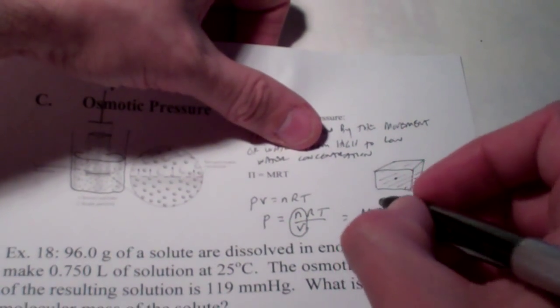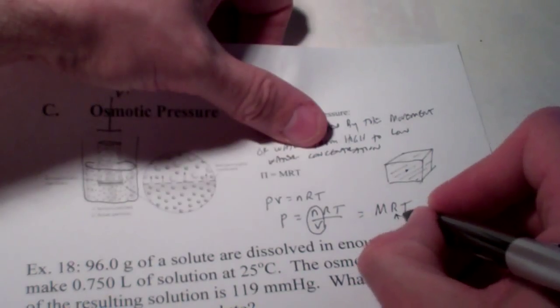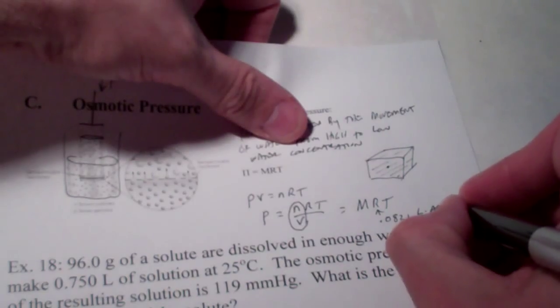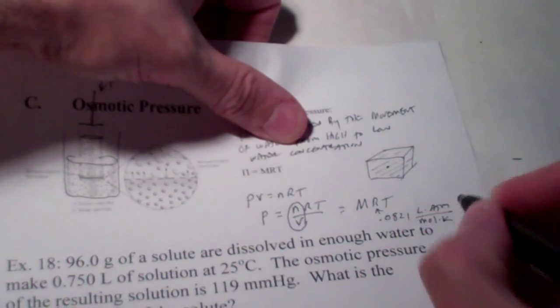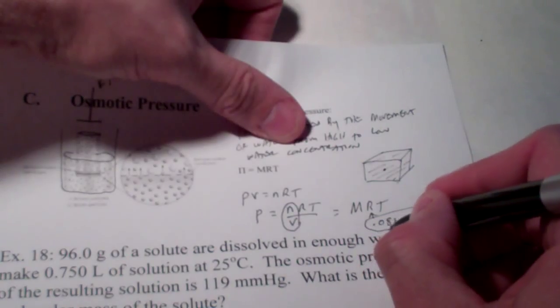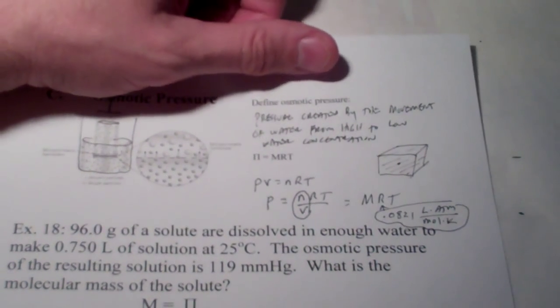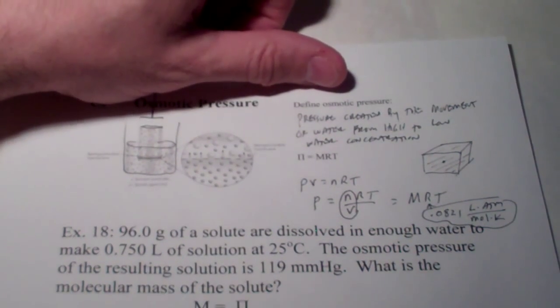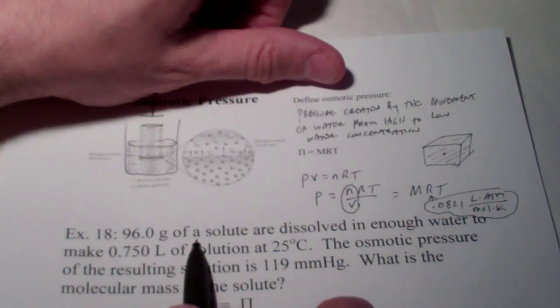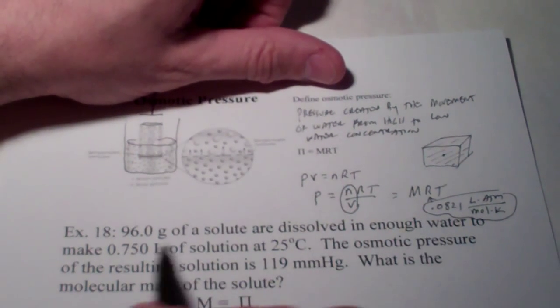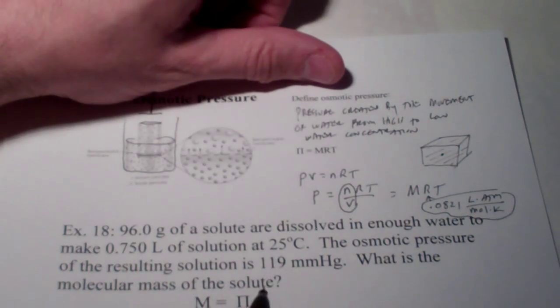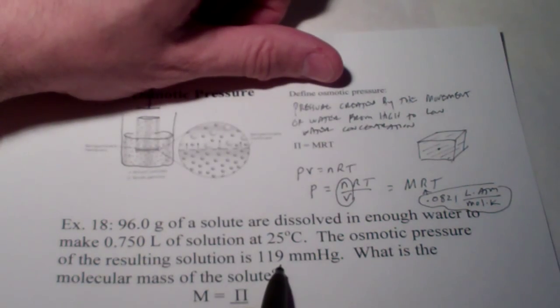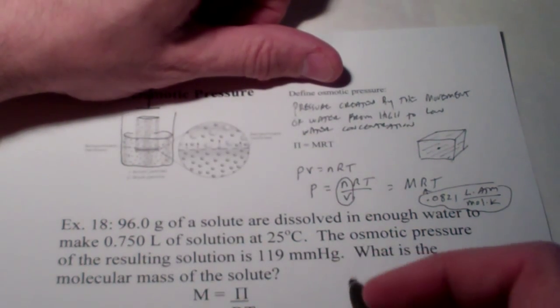So, we use the ideal gas law constant R. And it's the same one. R is 0.0821 liter atmospheres per mole kelvin. It's the same gas law constant that we used in an earlier chapter. So, with that in mind, let's see if we can find the molecular weight of something. We have 96 grams of the solute. It's dissolved in enough water to make 0.75 liters of solution at 25 Celsius. The osmotic pressure of the resulting solution is 119 millimeters of mercury. What is the molecular mass of the solute?